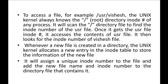Whenever a new file is created in a directory, the UNIX kernel allocates a new entry in the INODE table. For each file created, the kernel will allocate an INODE entry in the INODE table, assign a unique INODE number to the file, and add the new file name and INODE number to the directory file that contains it. So the directory file also contains the INODE number of each newly created file.